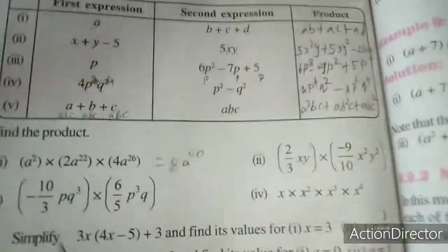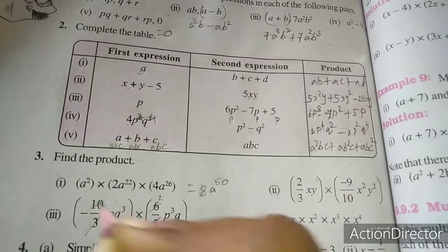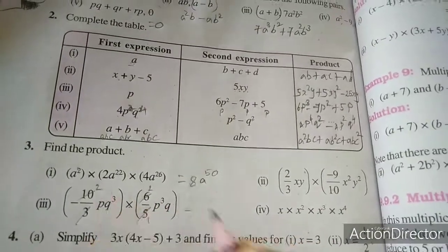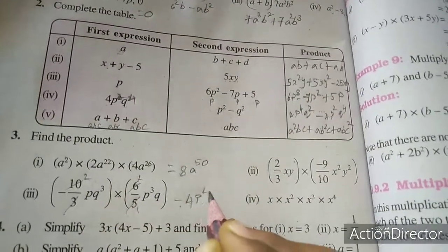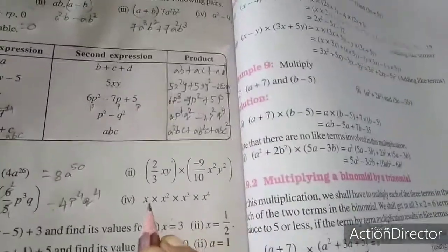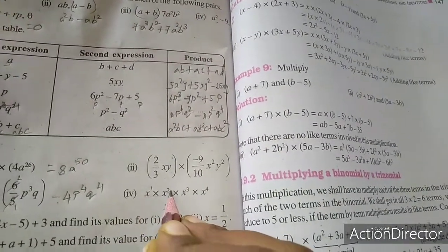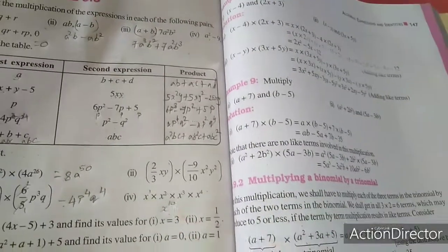Now we will move to the third step. See here bookly is 3, 2, 3 is 6, 1, 5 is 5, 2, 5 is 10. So this is minus 1, so 2, 2 is 4. P cube into p is p power 4, q cube into q is q power 4. One and each. Here we will add, so x, 1 plus 2 is 3, 3 plus 3 is 6, 6 plus 4 is 10. One and each.